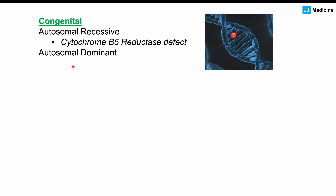There's also an autosomal dominant form, which involves hemoglobin itself. There's a change in an amino acid in hemoglobin leading to an altered structural change, which we call hemoglobin M — or hemoglobin M disease. In the autosomal dominant form, you only need one copy of an affected allele to manifest the condition, whereas in autosomal recessive forms, we need two copies.